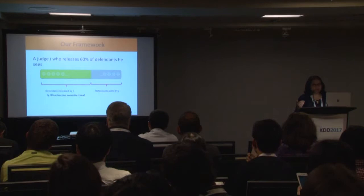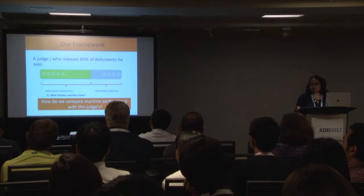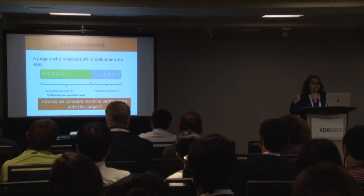So given this setup, our question is: how do we compare machine or algorithmic performance with that of Judge Jay, who releases 60% of the defendants?